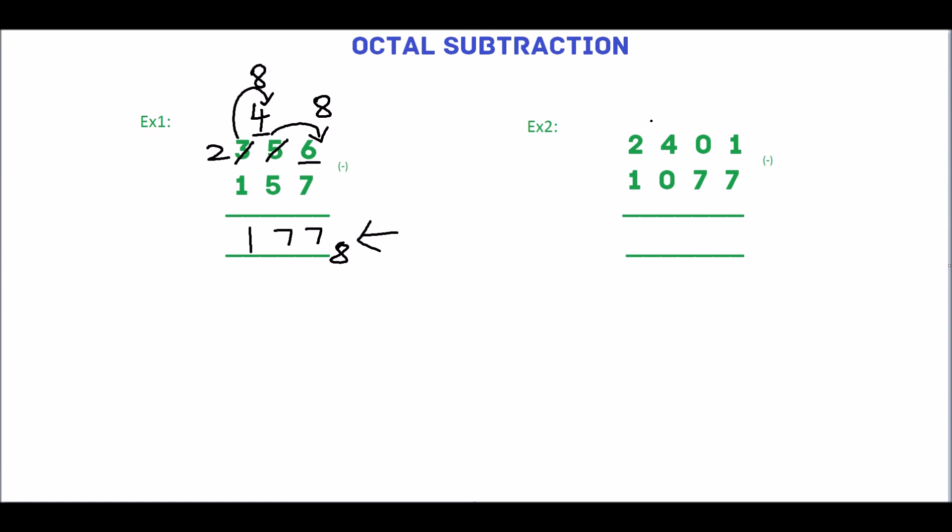Next we will solve the second example. Start with rightmost digits which are 1 and 7. 1 is smaller than 7 so we cannot subtract. Take borrow from the next digit which is 0. We cannot get the borrow, so take the borrow from the next digit that is 4.